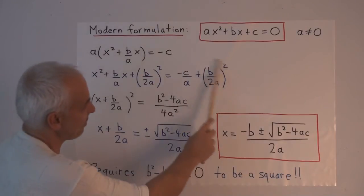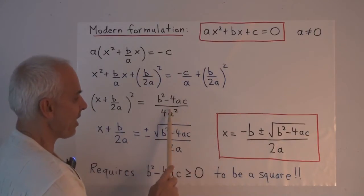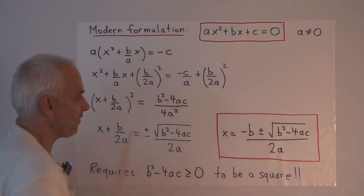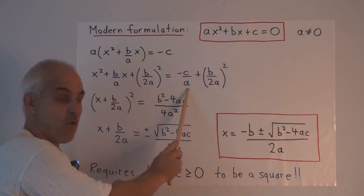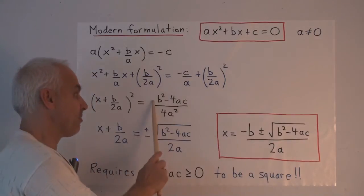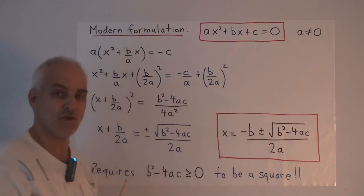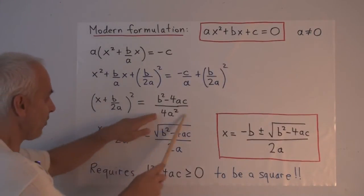And when we simplify what's on the right, the common denominator is 4a squared, and there will be a b squared from here. And when we take this over a common denominator of 4a squared, we have to multiply the top by 4a, giving us b squared minus 4ac on the numerator here.